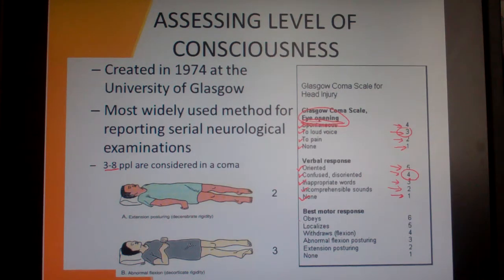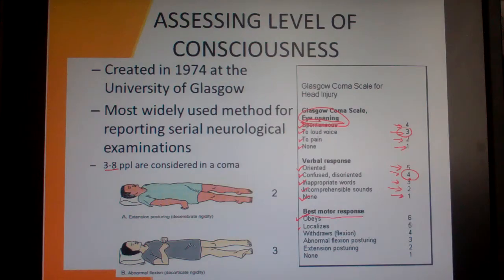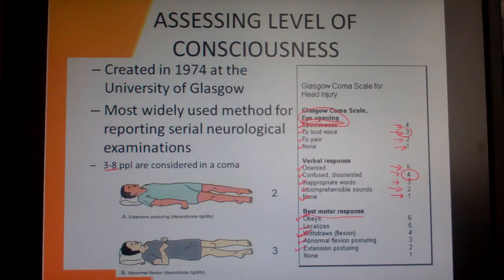Now we have motor response. If they obey commands, that's six points. If they can localize, five points. If their motor response is to flex or withdraw from painful stimulus — like flinching away — that's fewer points. You can also see abnormal flexion posturing, like the fetal position, or extension posturing, which is stiff like going into a seizure. And then none at all. A score of three to eight across all categories is considered a coma by the Glasgow Coma Scale.